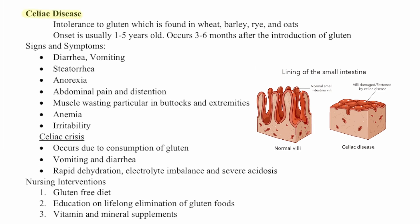Then we have celiac disease, which is an intolerance to gluten found in wheat, barley, rye, and oats. Onset is usually one to five years old, occurring three to six months after gluten introduction. Signs include diarrhea, vomiting, steatorrhea, anorexia, abdominal pain and distension, muscle wasting particularly in the buttocks and extremities, anemia, and irritability. A celiac crisis occurs due to gluten consumption and presents with vomiting, diarrhea, rapid dehydration, electrolyte imbalance, and severe acidosis. Nursing interventions include a gluten-free diet, lifelong elimination of gluten foods, and vitamin and mineral supplements.